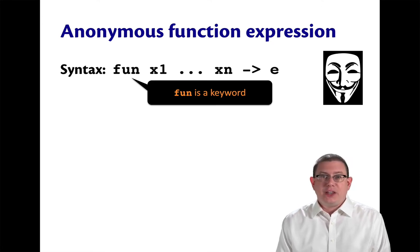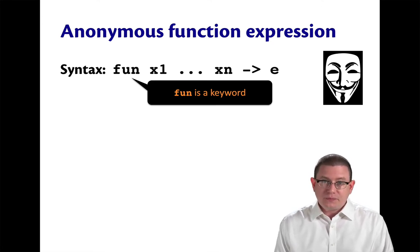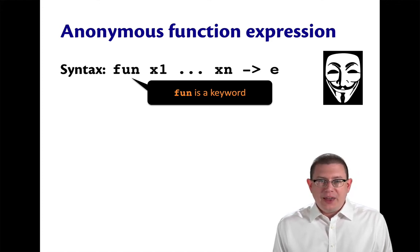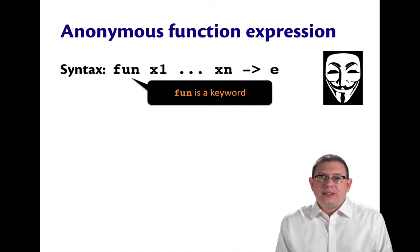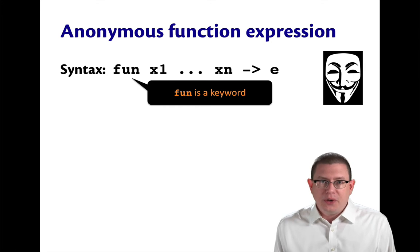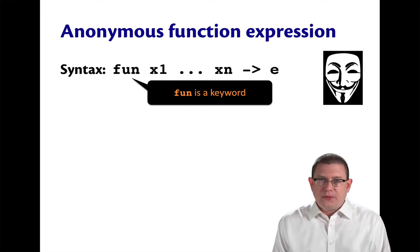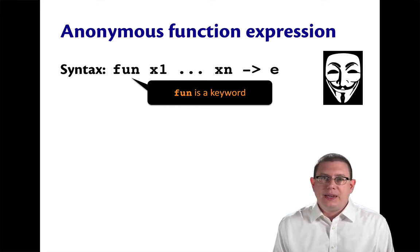Of course, you can name these as you could name any other identifier in OCaml. Then there's a little piece of punctuation, which is the dash greater-than. That's meant to look like an arrow — the idea is that it's a transformation of the input into the output. And finally, the body of the anonymous function e, which itself can be any expression.